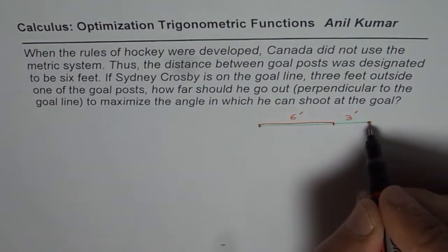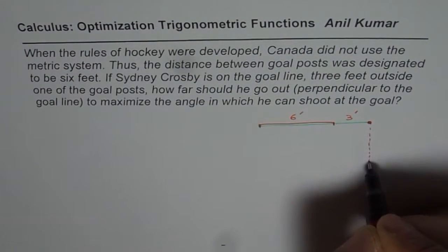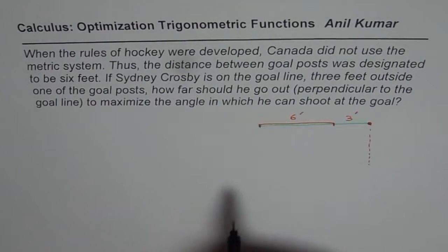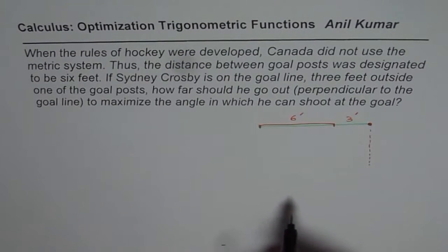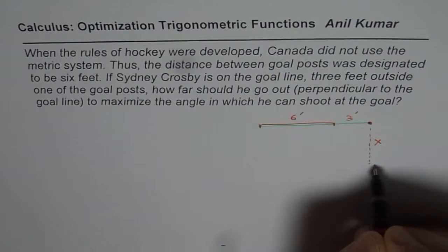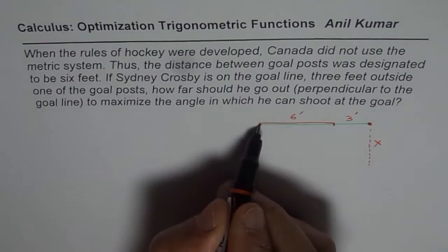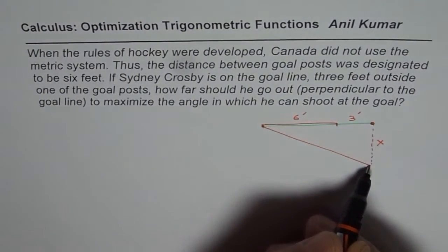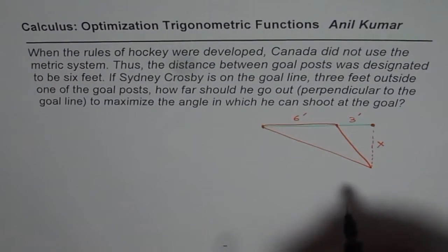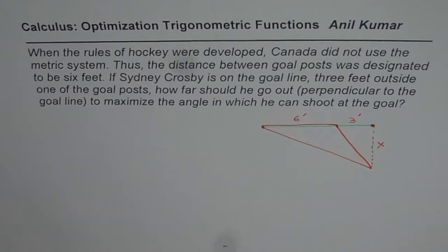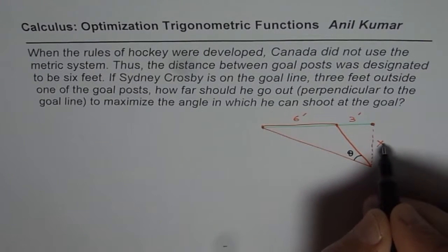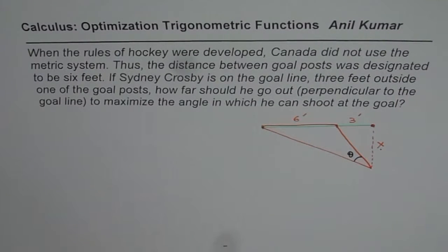Now how far means he has to come this side. As he moves in this side, the angle of shooting increases. Do you see that part? So that is the question. So how far could he go? So this distance x we need to find so that we could maximize this angle. Do you get the idea? We need to maximize this angle. That is the question for us. So we need to maximize this angle theta. And we need to find what is this value of x.